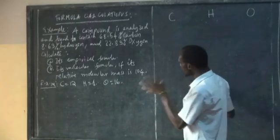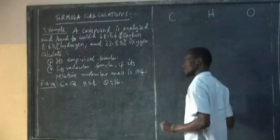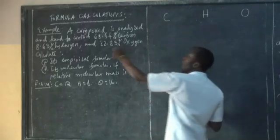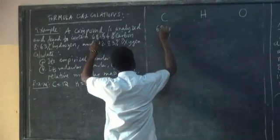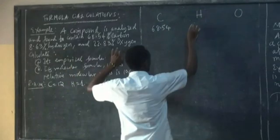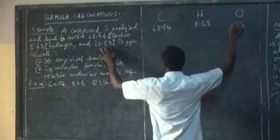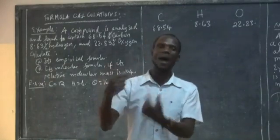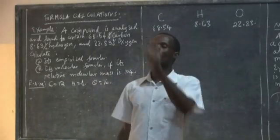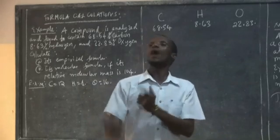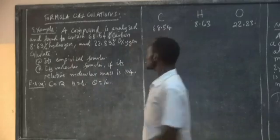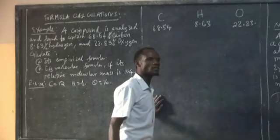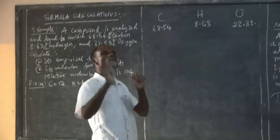So you have to be very careful. The first step is to list the elements found in the compound: we have carbon, hydrogen, and oxygen. The second step is to list their respective percentages: carbon is 68.54%, hydrogen is 8.63%, and oxygen is 22.83%. If it is given in terms of mass, you list their respective masses. After writing those values, the next step is to divide by the relative atomic mass of the respective elements.